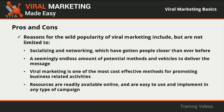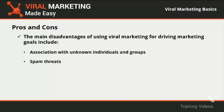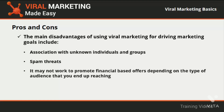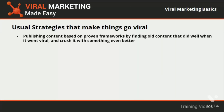The main disadvantages of using viral marketing include association with unknown individuals and groups — the strength of viral marketing heavily depends on how a message is transmitted from one person to another, and people you would rather not interact with can easily be reached. There are also spam threats — when not correctly planned, your campaign will either come up as a spamming campaign or you might become the target of spammers. Additionally, it may not work to promote financial-based offers depending on the type of audience you end up reaching.